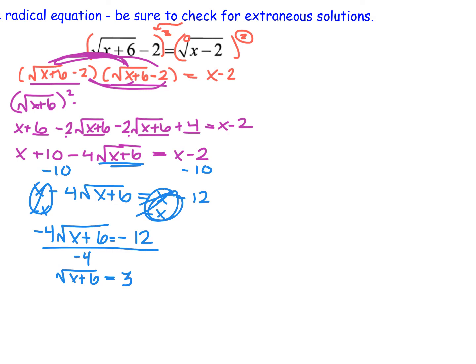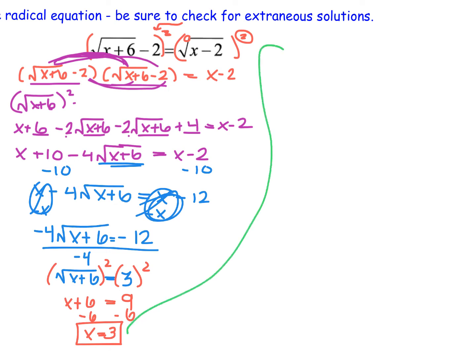Now that I have the square root by itself, I square both sides to undo it. That leaves x plus 6 on the left and 9 on the right. Subtracting 6, I get x is equal to 3. So our potential solution is x equals 3. Let's take a moment to test this in the original equation to ensure it's not extraneous.